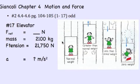The cable supporting a 2100 kg elevator has a maximum strength of 21,750 N. What is the maximum upward acceleration the elevator can give without breaking?